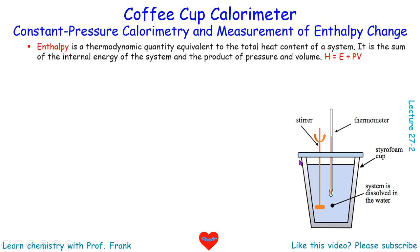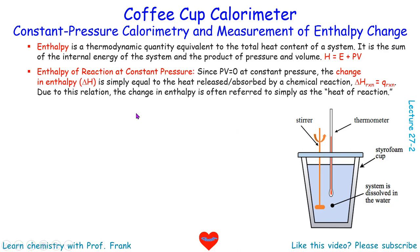What is enthalpy? Enthalpy is a quantity equivalent to the total heat content of a system. Enthalpy is the sum of the internal energy of the system and the product of pressure and volume, which is PV work. So therefore, the equation that describes enthalpy is: enthalpy equals internal energy plus the PV work.